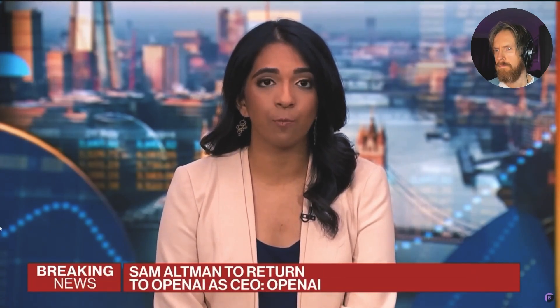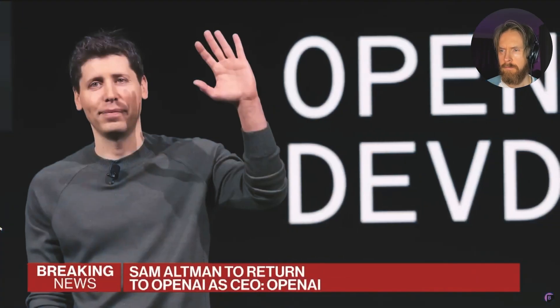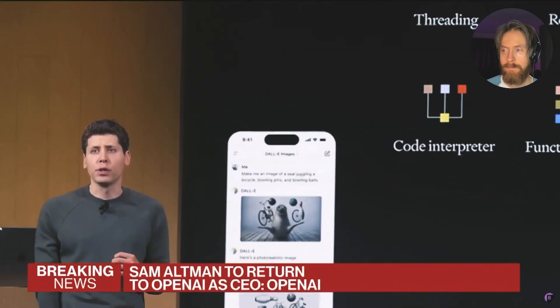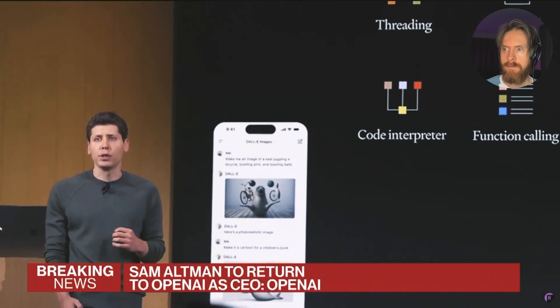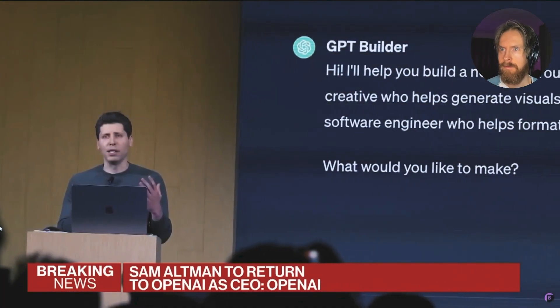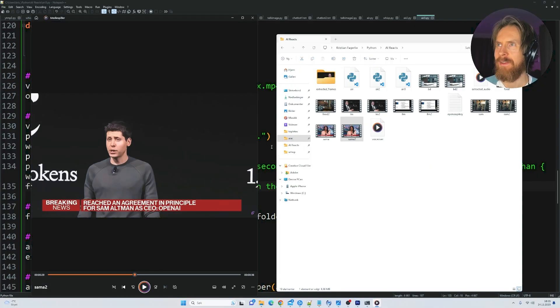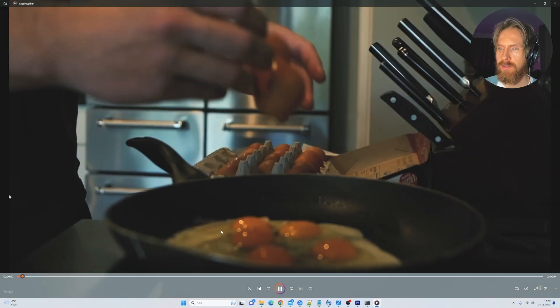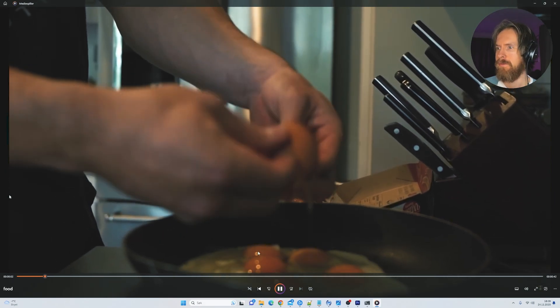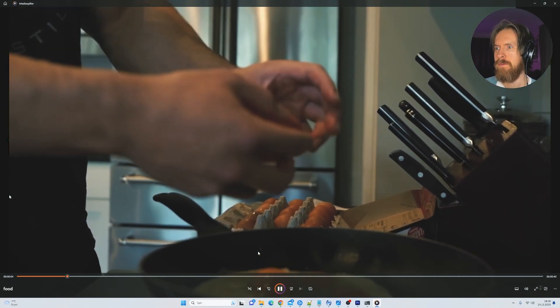The video showcases a news segment with a headline announcing that Sam Altman will reassume the CEO position at OpenAI. The news anchor clad in a pink blazer reports the development with professionalism meanwhile footage of Sam Altman engaging with an audience on stage is shown indicative of his active role in the tech community. I think this works. Not bad. I like that it mentioned what kind of dress she was wearing the news anchor.